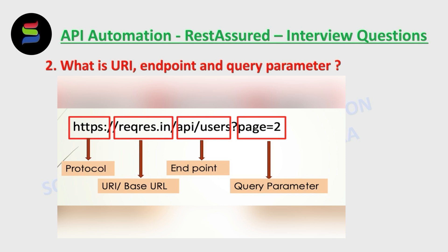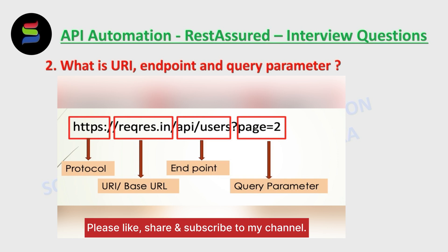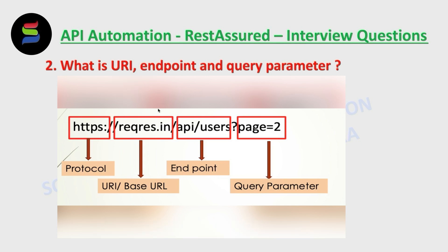The second part is the base URL — that's where we are going to make the request. The third part is the endpoint, which will change for all APIs, while your base URL remains the same.